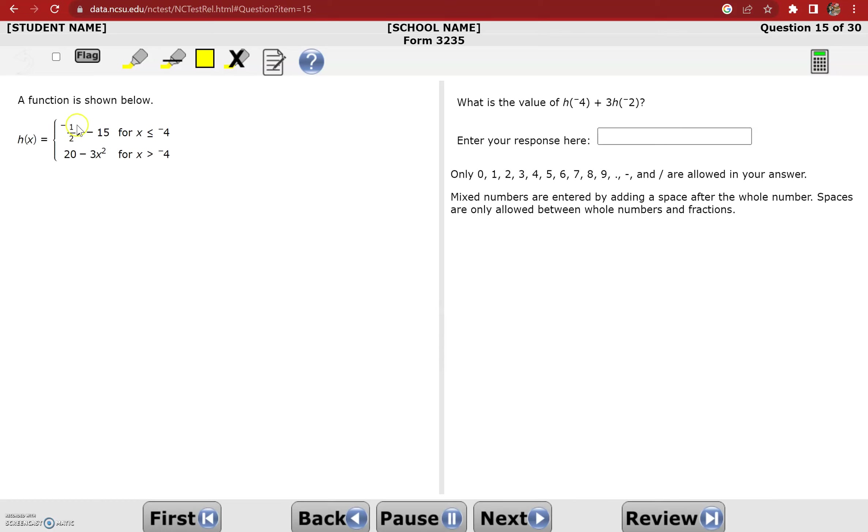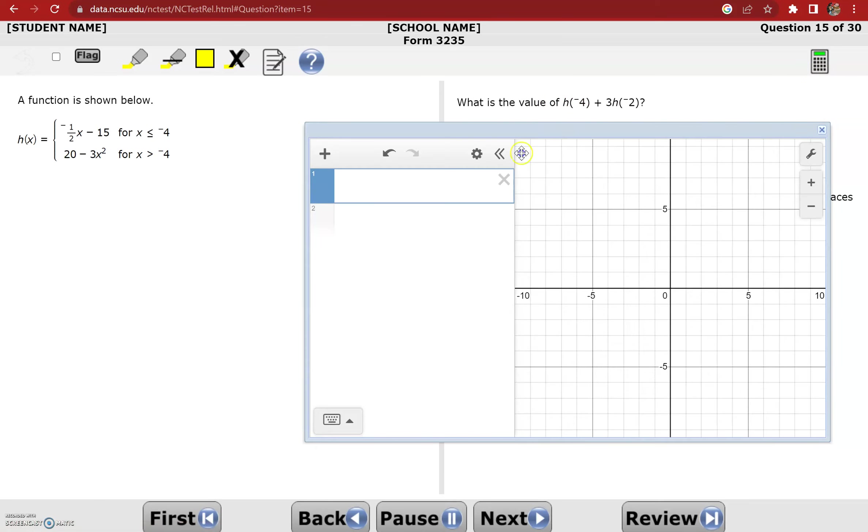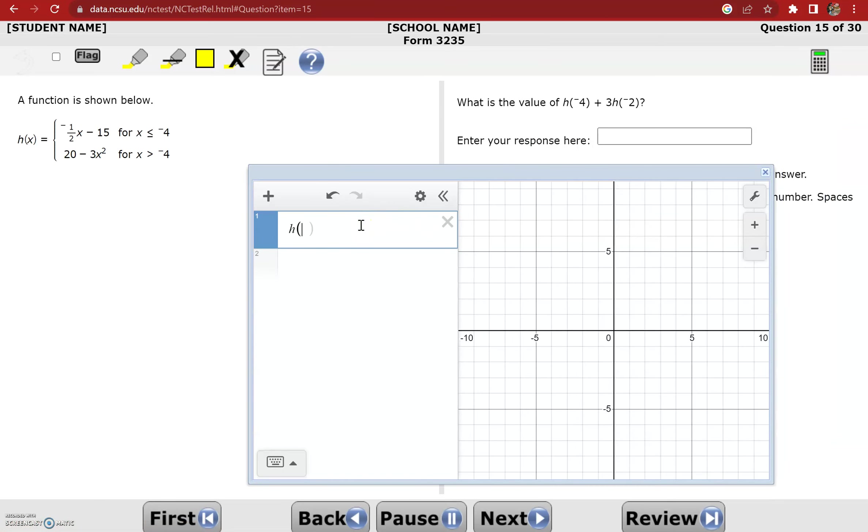This one says a function is shown below, h of x, it's a piecewise function that has two sub-functions, and we're asked to evaluate h of negative 4 plus 3 times h of negative 2. So I'll start with this one because it's just a little bit easier to type a single function rather than 2. If I want to graph a piecewise function in Desmos, I have to first type the first sub-function, and then I have to add these squiggly brackets, which you can get next to the P button. So shift and then just to the right of the P button, and now I can type x is less than or equal to negative 4. I can't see it, so I must need to zoom out a little bit. There we go.